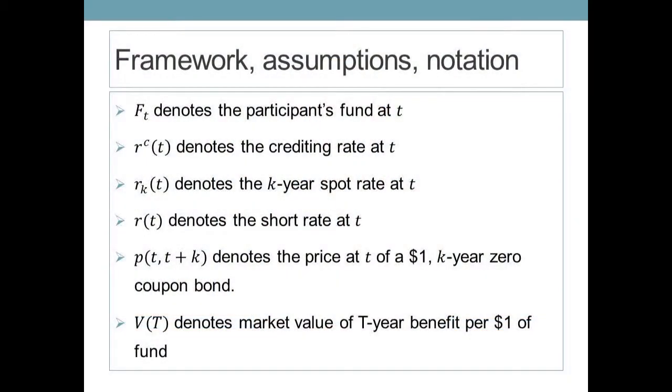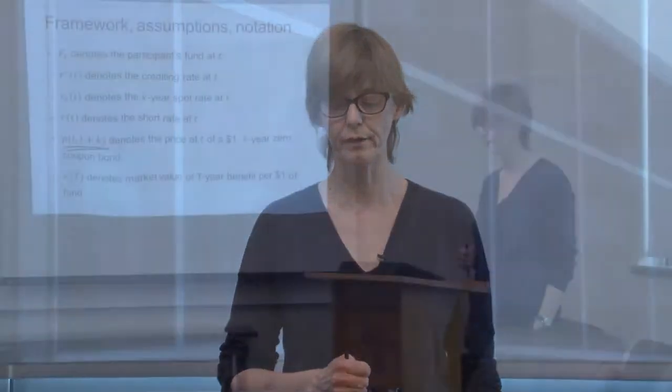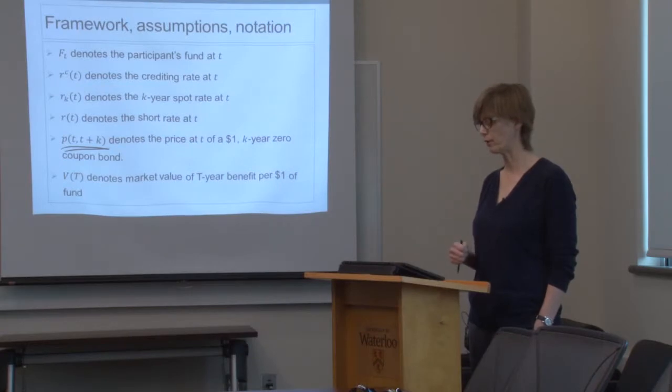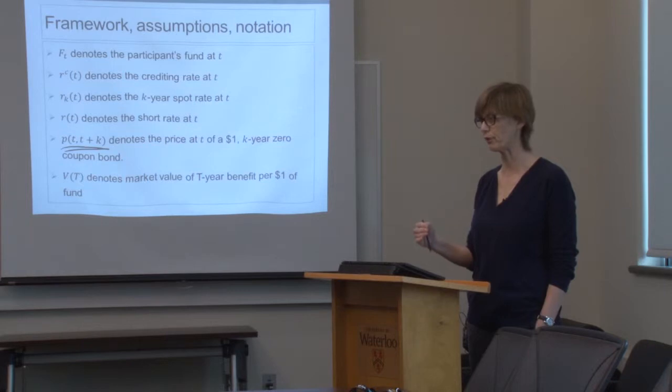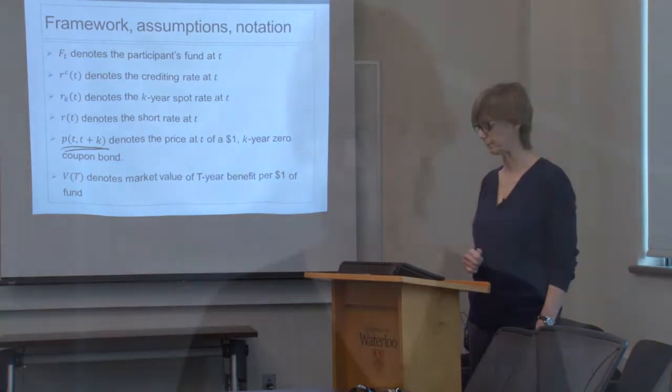Our ultimate goal is the valuation factor V_T — the market value of the cash balance benefit, including the guaranteed accumulation at the crediting rate, where we're considering a big-T-year horizon to retirement. For example, if V_T equals one, the market value of the benefit is exactly equal to the participant's fund at time T. So V_T is our objective.